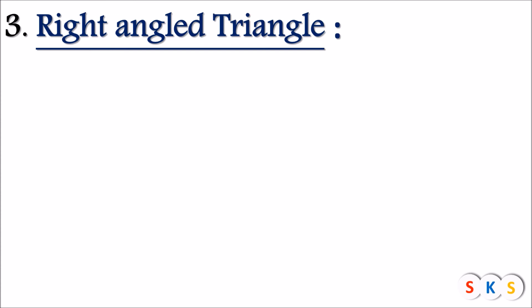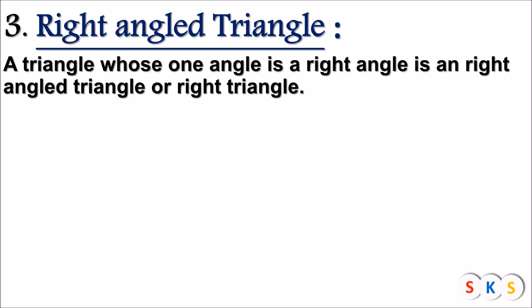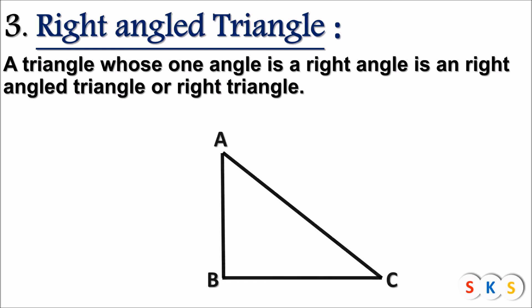Right Angle Triangle: a triangle whose one angle is a right angle is called a right angle triangle or right triangle. Look at this triangle. Here, angle A is 50 degrees, angle B is 90 degrees, and angle C is 40 degrees. You can see that angle ABC is a right angle — one of the angles is 90 degrees. Hence, this triangle is known as a right angle triangle.